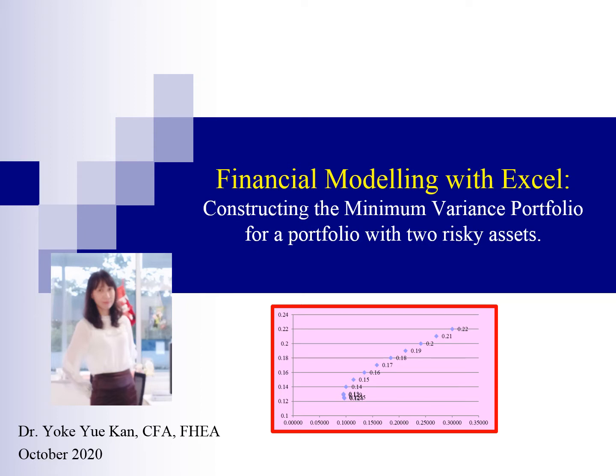In addition, you'll be able to understand how correlation plays a role in influencing the portfolio risk. We will also learn how to construct a minimum variance portfolio. Constructing a portfolio with two risky assets is the most basic of portfolio formation. Hopefully, the theory presented in this learning material will form the foundation towards more advanced portfolio management in future. Let's start learning together.